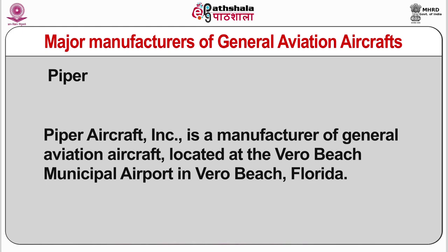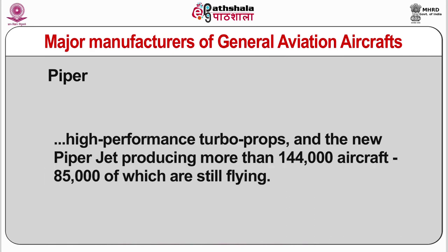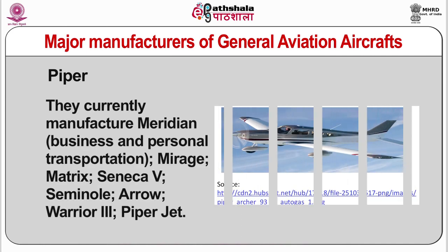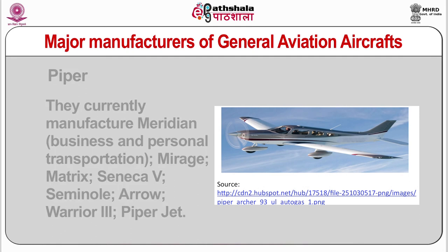Piper Aircraft is a manufacturer of general aviation aircraft located at the Vero Beach Municipal Airport in Vero Beach, Florida. Mr. Piper introduced the Piper Cub in 1937, and since then Piper has become the only general aviation manufacturer to offer a complete line of aircraft from rugged trainers to high-performance turboprops and the new Piper Jet, producing more than 144,000 aircraft, 85,000 of which are still flying. They currently manufacture the Meridian, Mirage, Matrix, Seneca V, Seminole, Arrow, Warrior III, and Piper Jet.